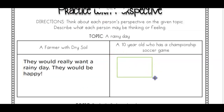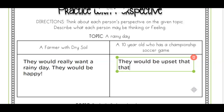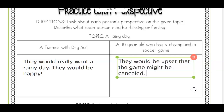What about a 10-year-old who has a championship soccer game? They'd be outside, but a storm is coming and it's going to rain. They probably would not be happy — they would be upset that the game might be canceled. Go ahead and type that out. Pause the video if you need to.